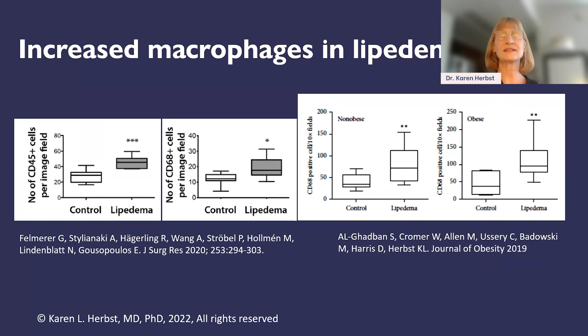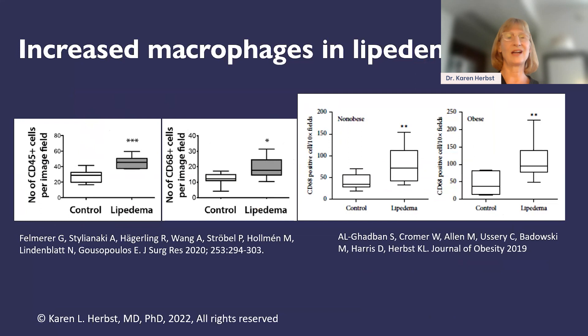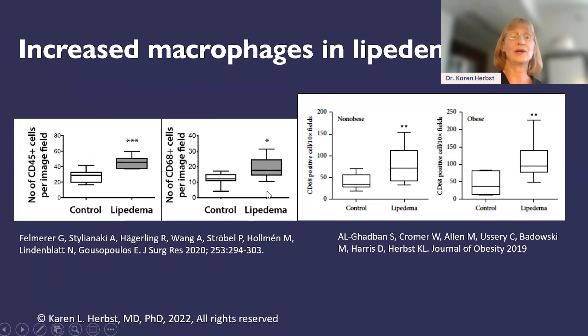Let's look at data showing we do have inflammation in lipedema tissue. A group out of Belgium labeled immune cells with CD45, a general marker for white blood cells. They found definitely more white blood cells in lipedema tissue compared to controls. When they looked closer, macrophages were higher in lipedema than in control tissue. It looks like in lipedema tissue, we're in that chronic phase of cleaning up the tissue, but it never fully gets cleaned up because inflammation is still occurring.